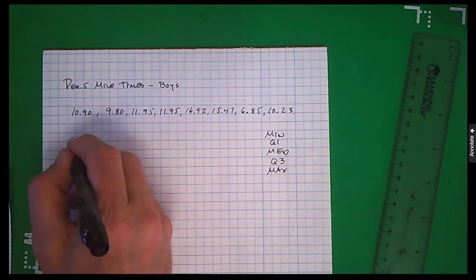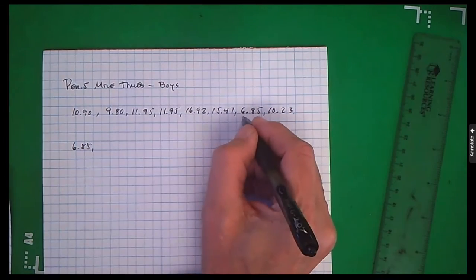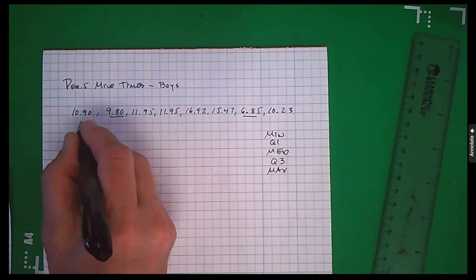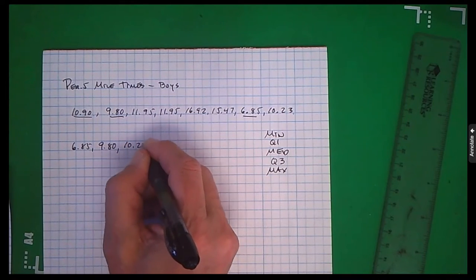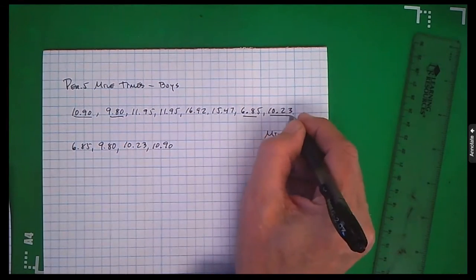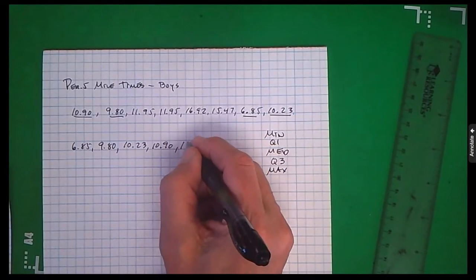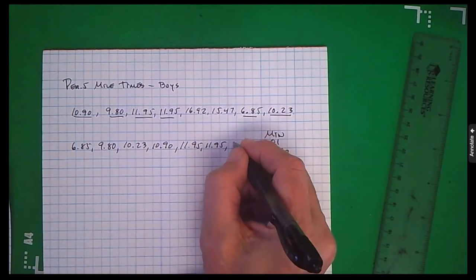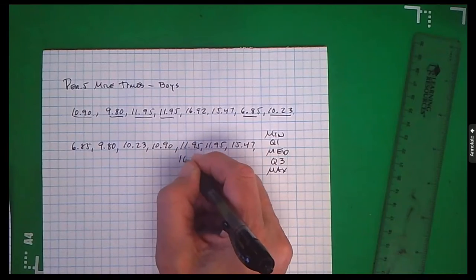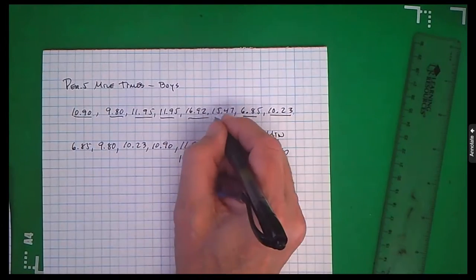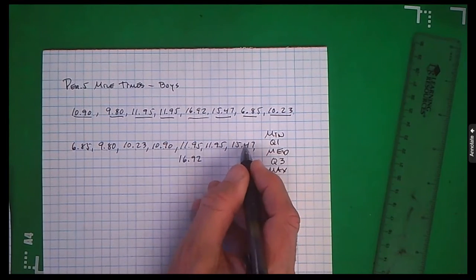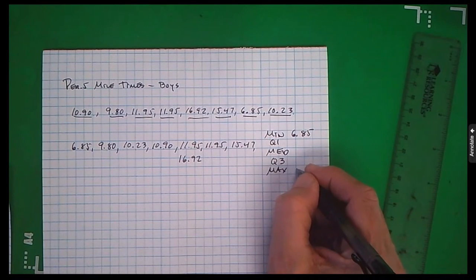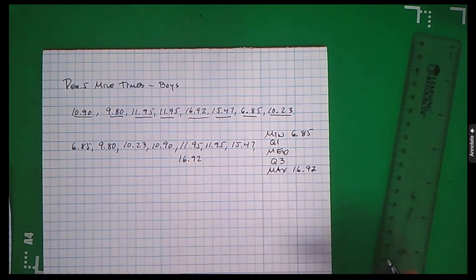Let's put these data in order first. 1, 2, 3, 4, 5, 6, 7, 8. So we can see the minimum is 6.85. The maximum is 16.92.